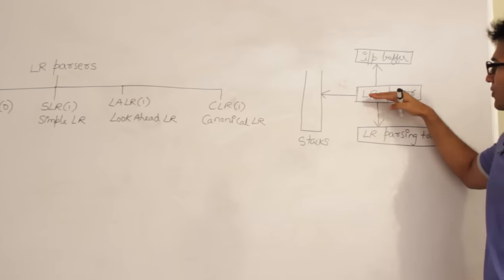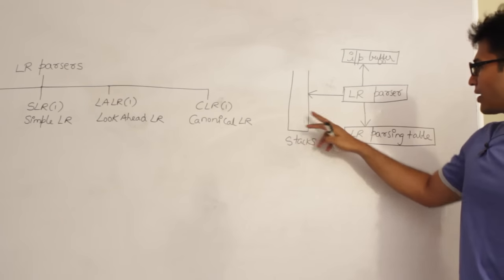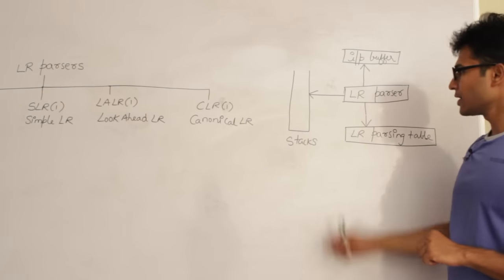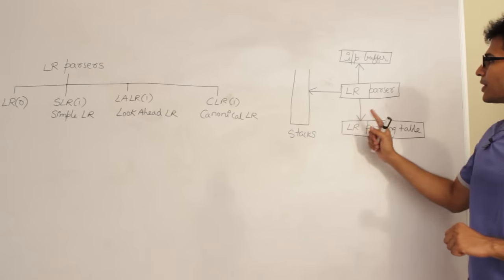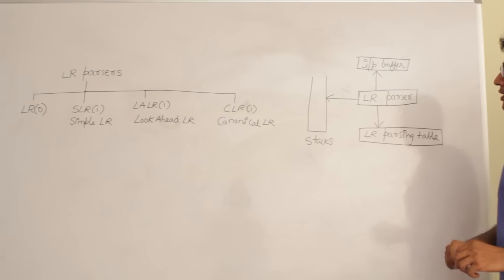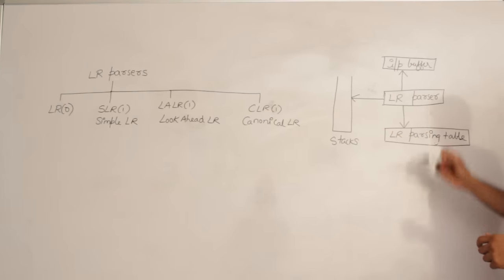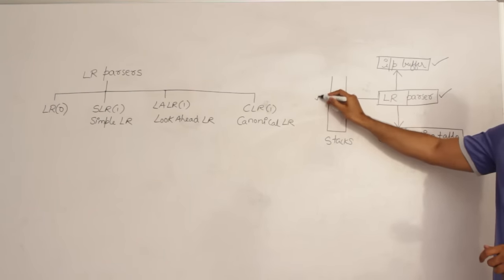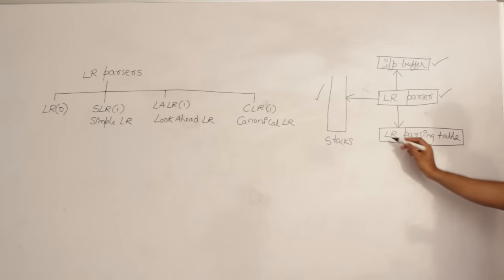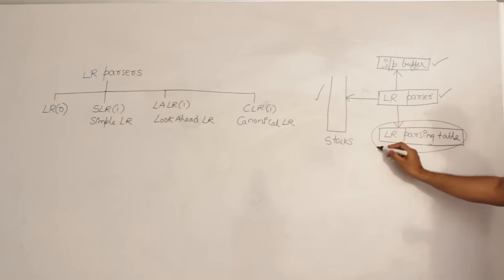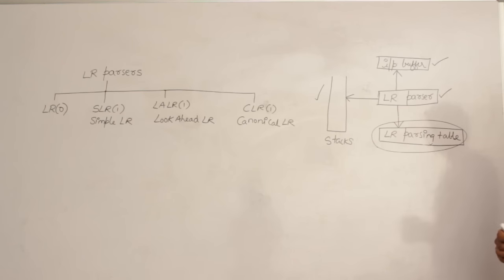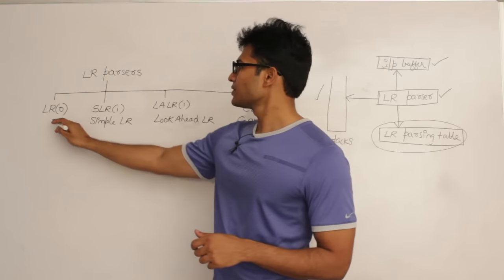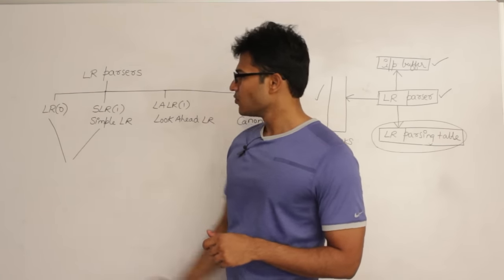The LR parser algorithm requires an input stack, an LR parsing table, and an input buffer — same as the bottom-up parser. In LL1 it was the LL1 parsing table; in LR it is the LR parsing table. For all four parsers, the parsing algorithm is the same. Input is given in the buffer, everything uses a stack. The only difference among all these parsers is how you construct the parsing table.